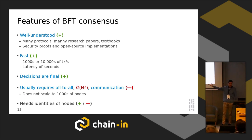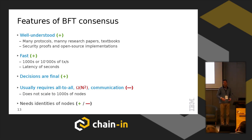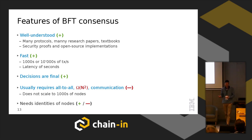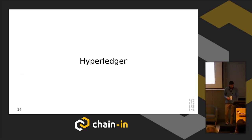The most important feature is the permissioned nature — it needs the identities of the nodes. This can be a feature or a problem. If you are interested in something where nobody is identifiable, it's a problem. If you are interested in more controlled applications, it's a feature that you know who has the power to influence the protocol. That's enough about consensus protocols — now let's turn to Hyperledger Fabric.